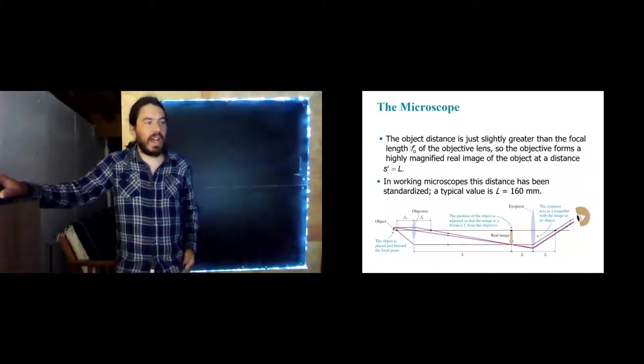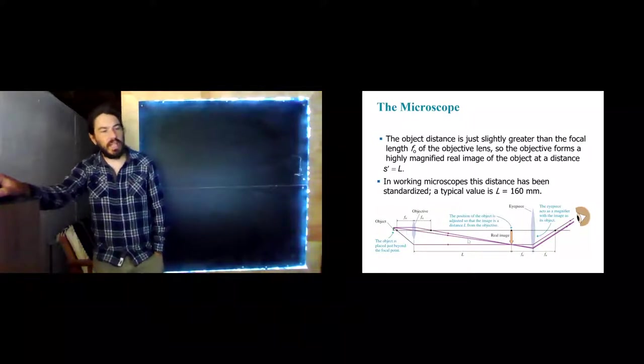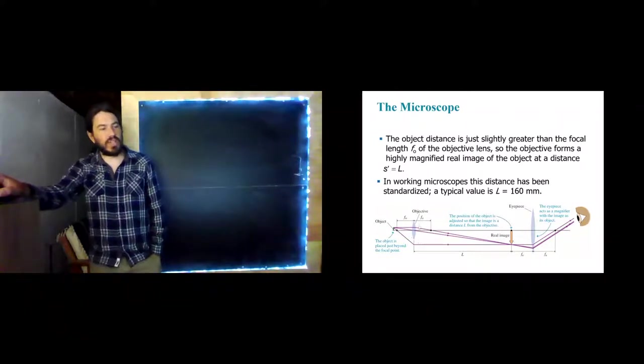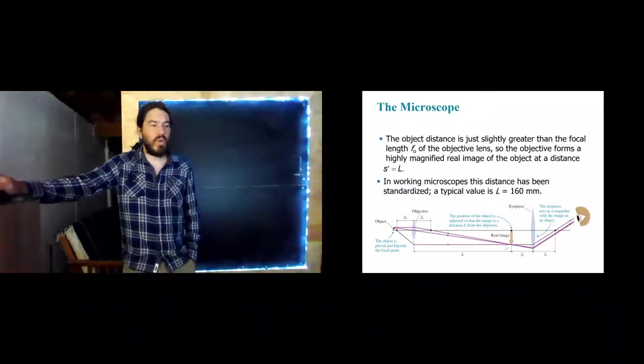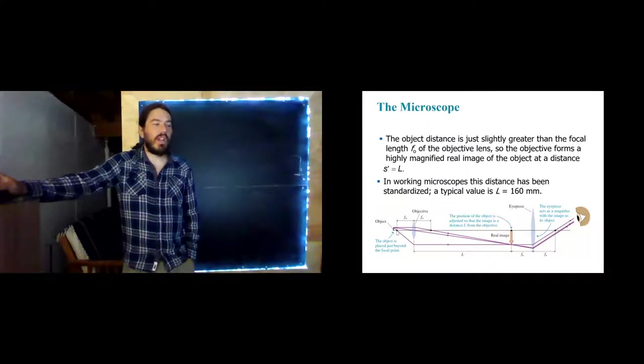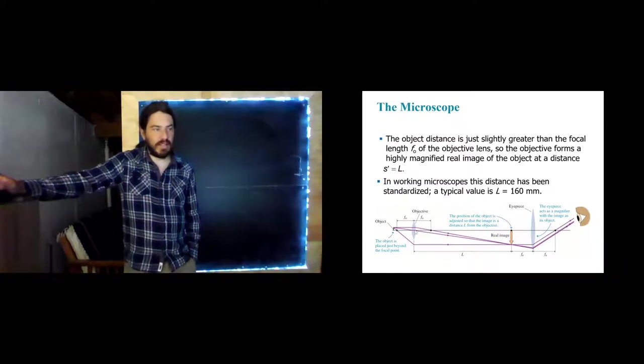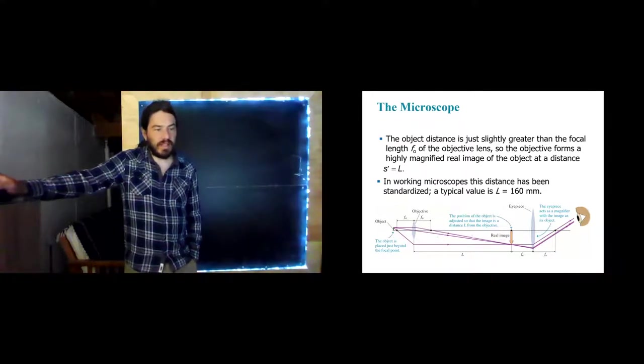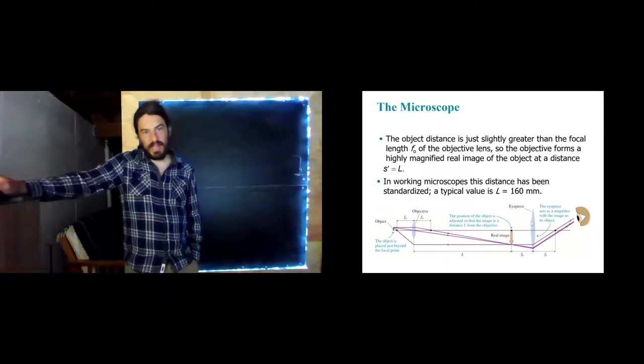So here's a little schematic. The object distance is slightly greater than the focal length. And so we do get a real image. So this first lens isn't quite being used exactly in the same way as the magnifier was. This is being used more like our camera, where we do have the object close to, but still slightly outside of, the focal point of my objective lens. However, what this objective lens does is it forms a real image right here. And that real image then becomes the object for the eyepiece lens.